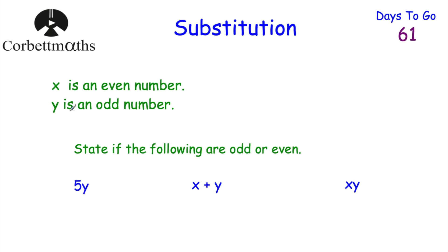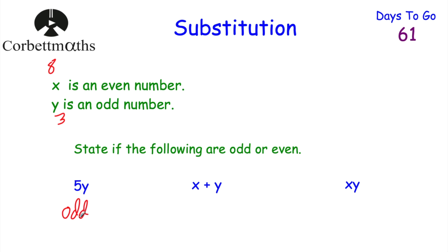Now let's look at some for you to try. X is an even number and Y is an odd number. Can you state whether 5Y, X plus Y, and XY are odd or even? Let X equal 8 and Y equal 3. 5Y means 5 times 3 equals 15 — that's odd. If Y were 7, 5 times 7 is 35 — also odd. So 5 times an odd number always gives an odd result.